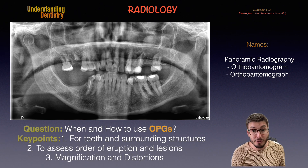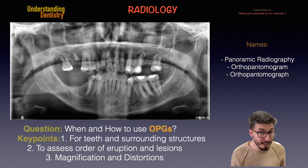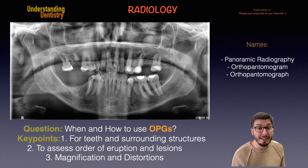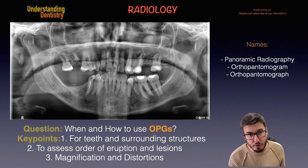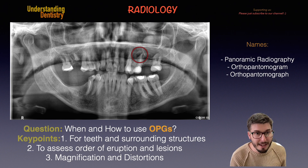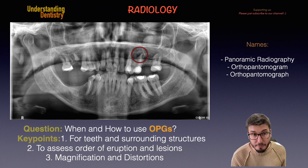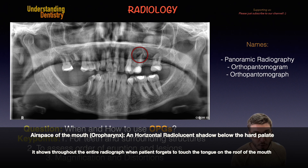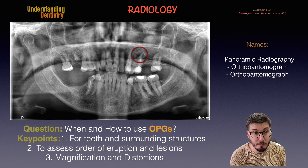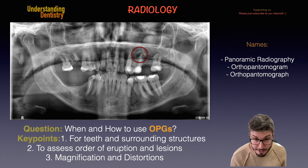The third key point is that we cannot forget about the fact that we have magnification and distortion with OPGs, and that's why we need periapical radiographs when we need more details. For example, we have this radiolucent image over here, which is suggestive of a granuloma with root resorption involved. But there is also a radiolucent shadow which belongs to the airspace of the mouth, being superimposed onto the lesion — and that's why we need a periapical radiograph to assess this area properly.